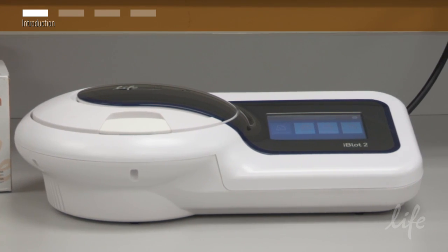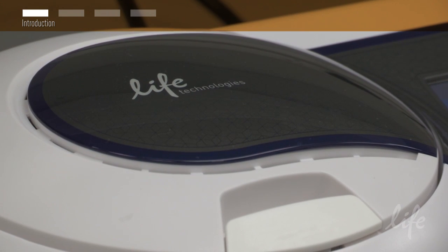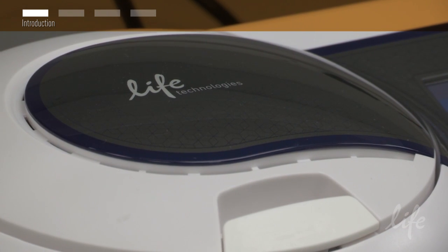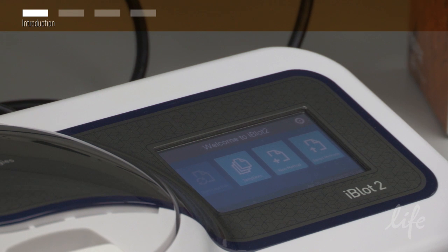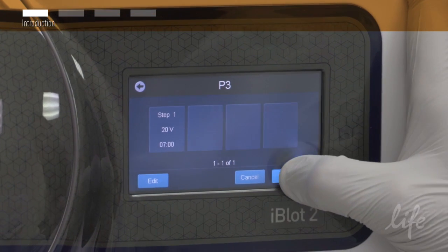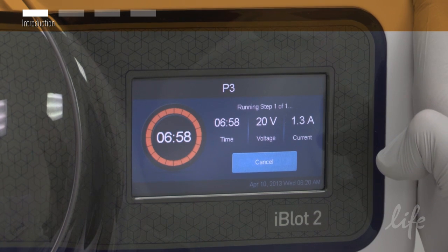The iBlot2 dry blotting system, based upon the original fast transfer system, efficiently and reliably transfers proteins from polyacrylamide gels for Western blot analysis in seven minutes or less without the need for buffers.